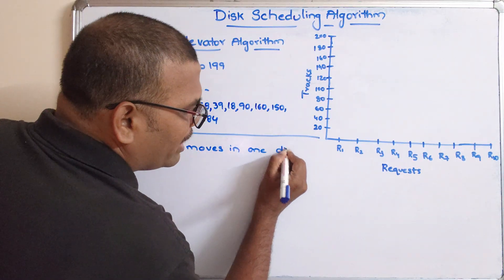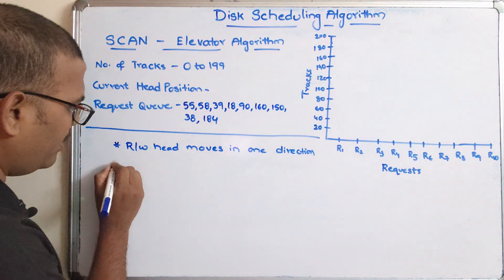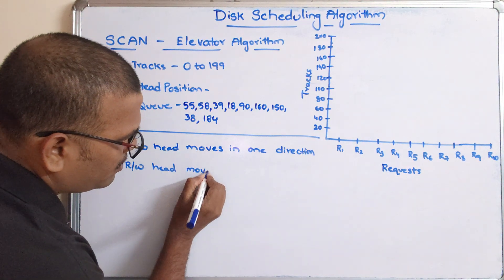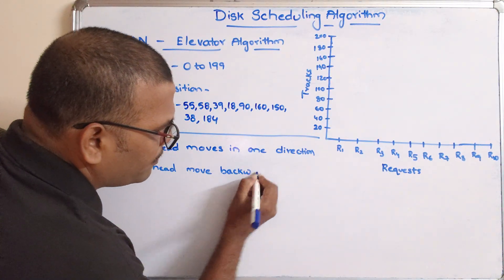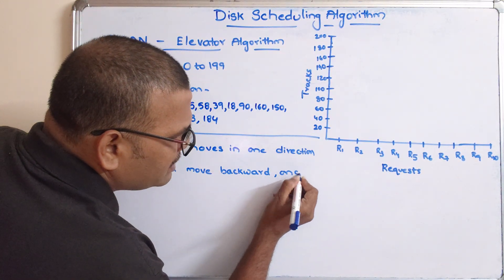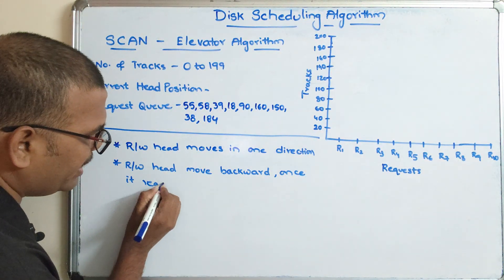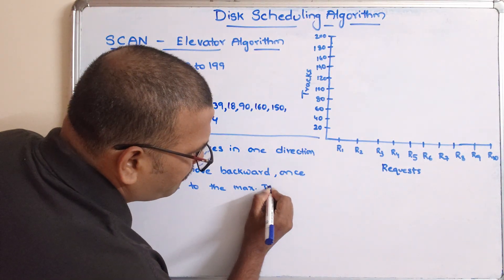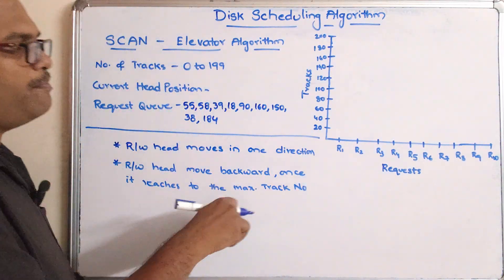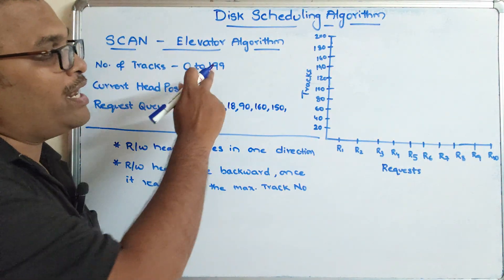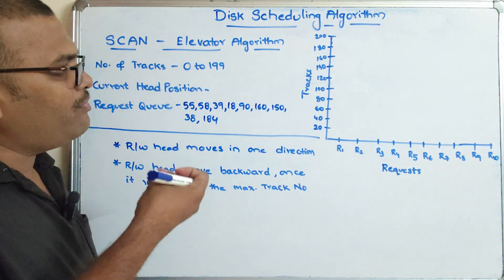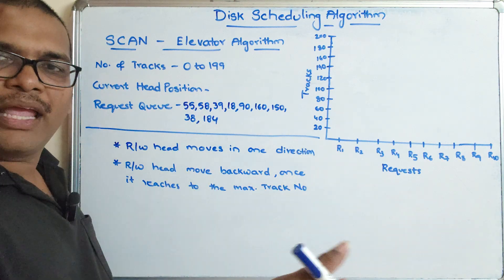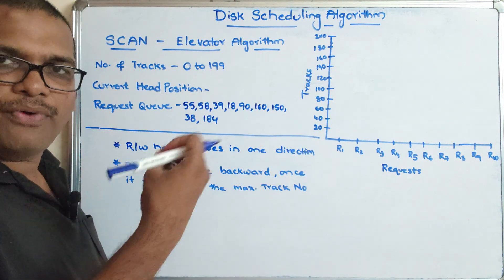The read/write head moves in one direction only, and it moves backward once it reaches the maximum track number. In this example we are taking tracks from 0 to 199, so 199 is the last track. Whenever the read/write head moves towards 199, only then will the read/write head again start moving from backward to forward.